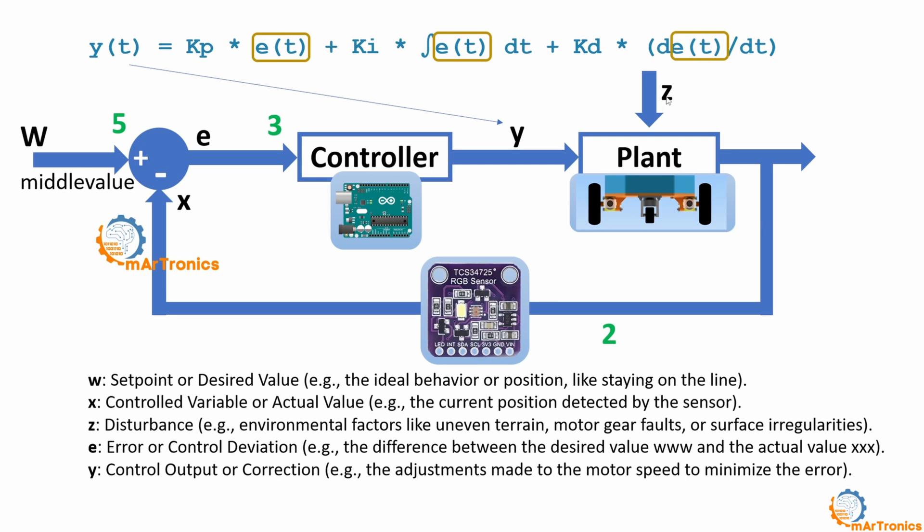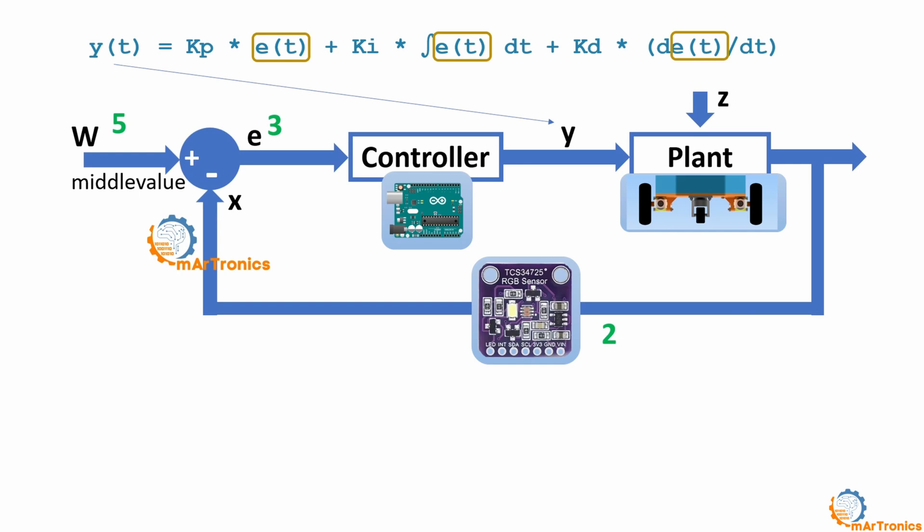The PID control equation basically consists of three parts. We have the P control part, then the I control part, and then the D control part. So for P control, we have this coefficient Kp, which we multiply directly by the error. As for I control, we integrate the error over time and multiply it by the coefficient Ki. As for D control, we multiply the coefficient Kd by deriving the error over time or the change in error over time.